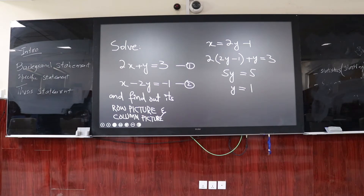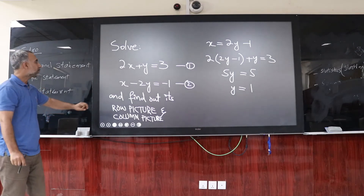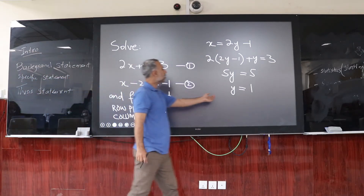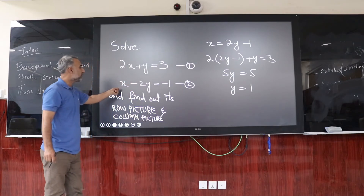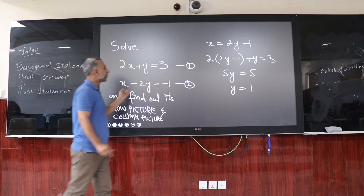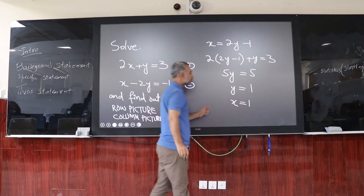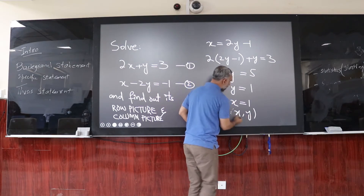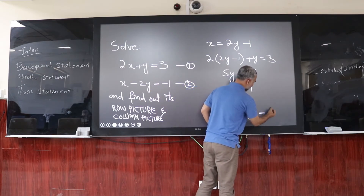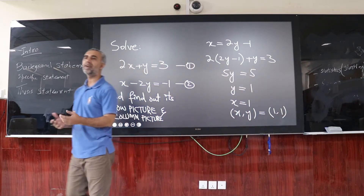There are many methods, but this is the simplest way for getting the point of intersection. This value of y helps determine the value of x using either equation 1 or equation 2. The value of x is 1. So the point of intersection is (1, 1), or we can call this the first solution set.